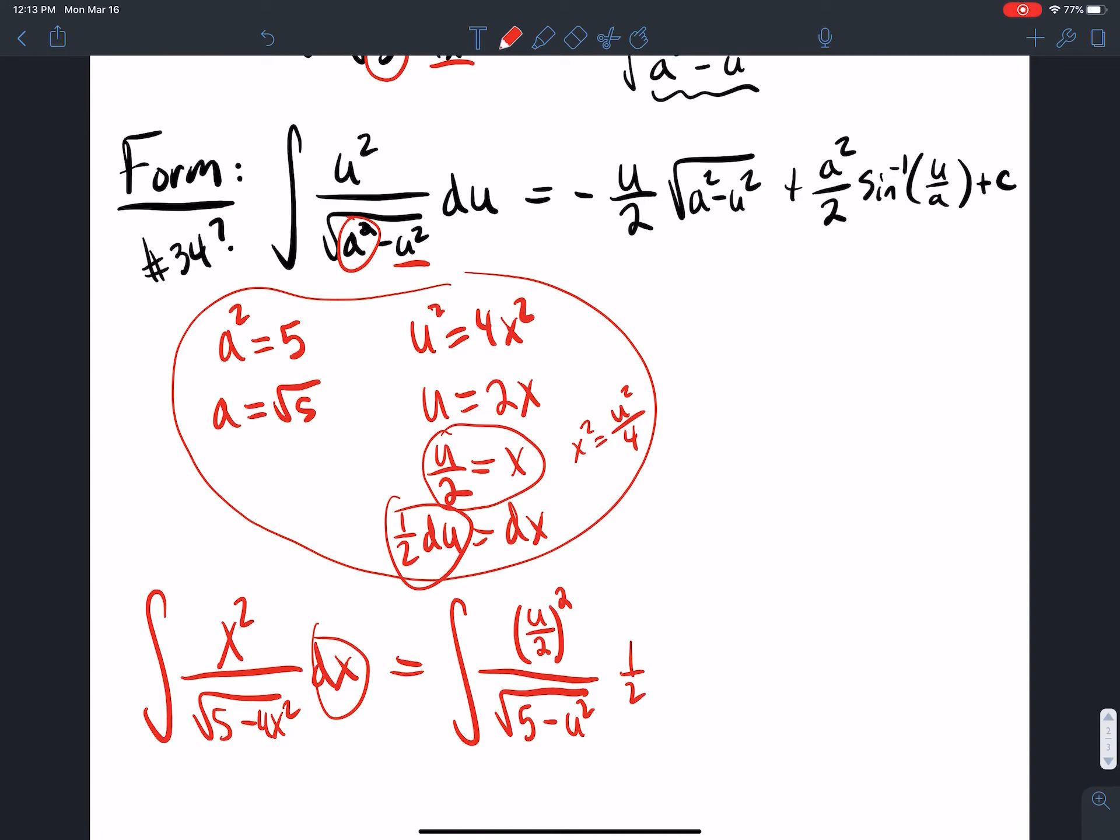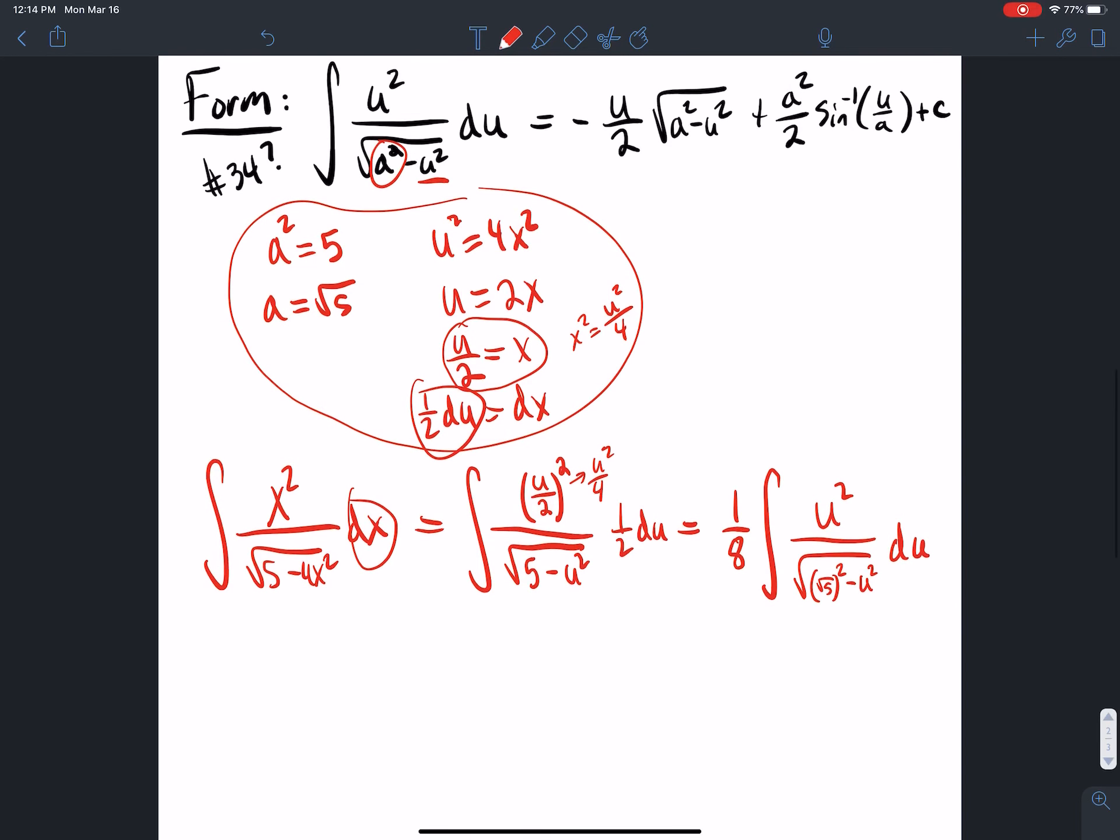So what do I have? This is going to get me u squared over 4 divided by 4 and divided by 1 half gets me 1 eighth out front. So I have u squared over square root, so this is like square root of 5 squared minus u squared du. So now my formula is set up and ready to use. I'm in this form now.